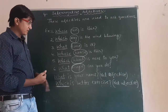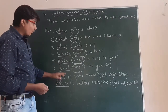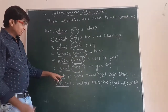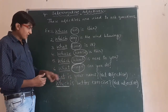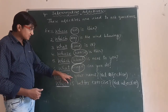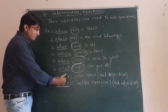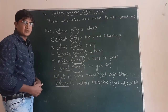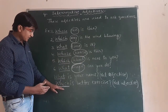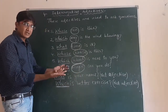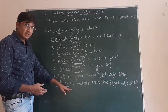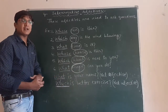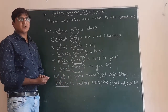Now look at these two examples. 'What is your name?' — here 'what' is not an adjective because it is not coming before a noun; after 'what' we have 'is'. That's why 'what' is not an adjective here. Second sentence: 'Which is better exercise?' — here 'which' is also not followed by a noun, so 'which' is not an adjective in this sentence. So the usage and position is very important.